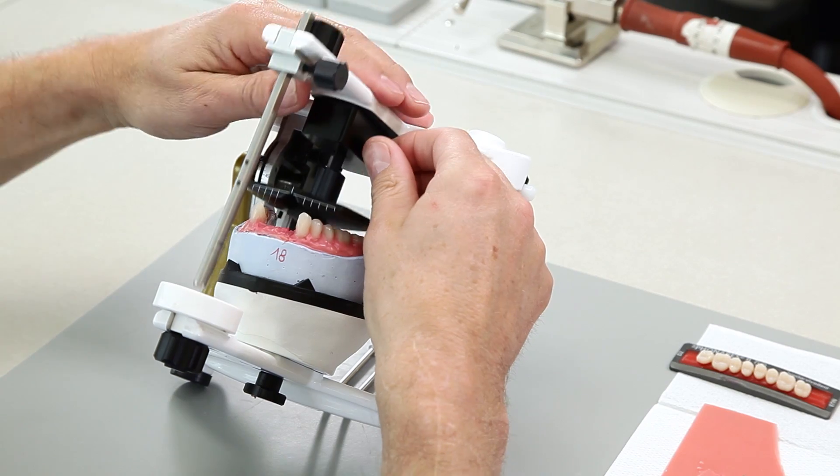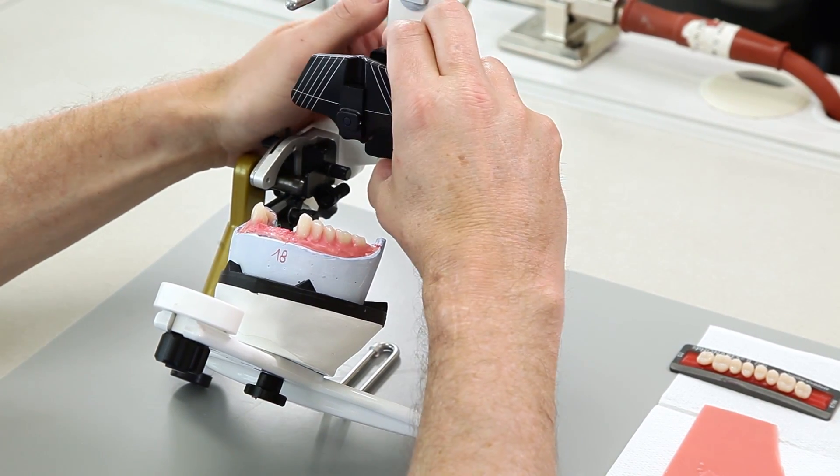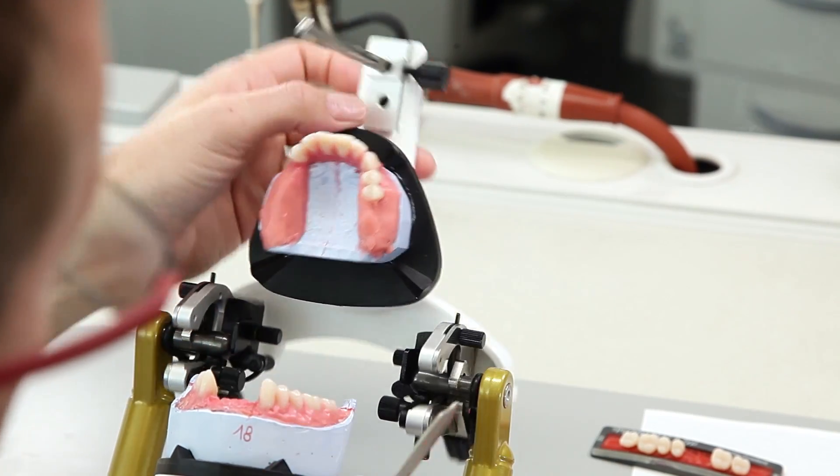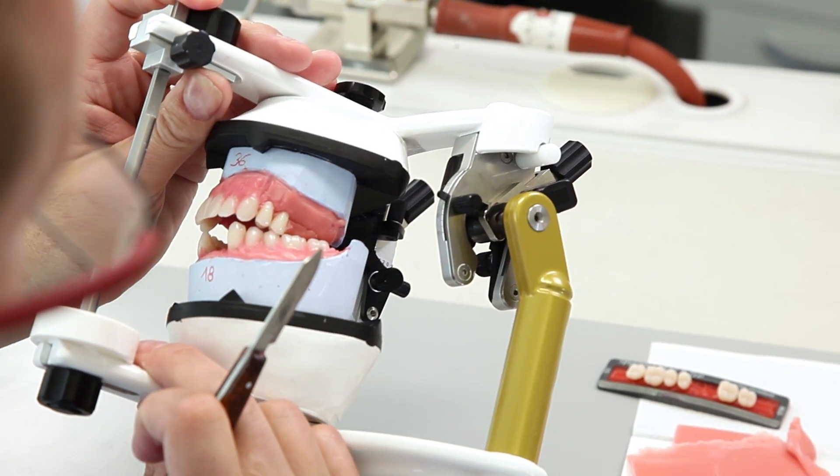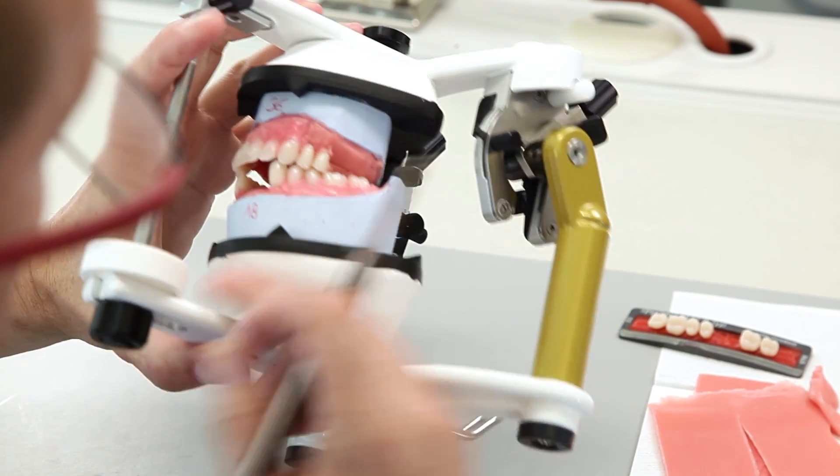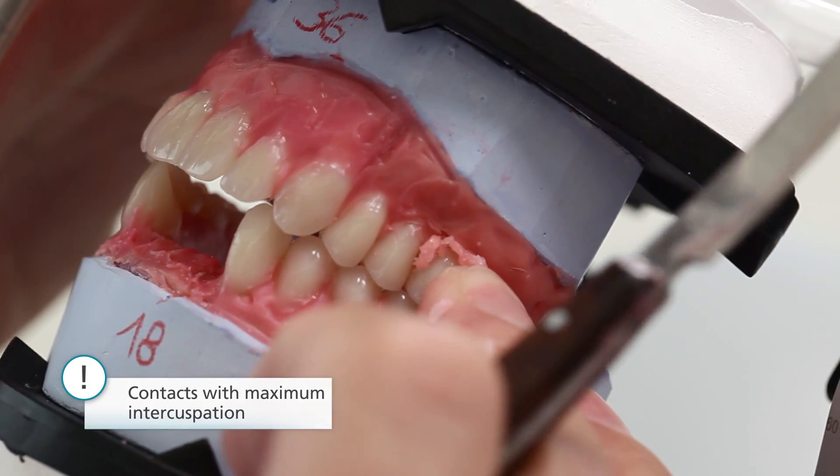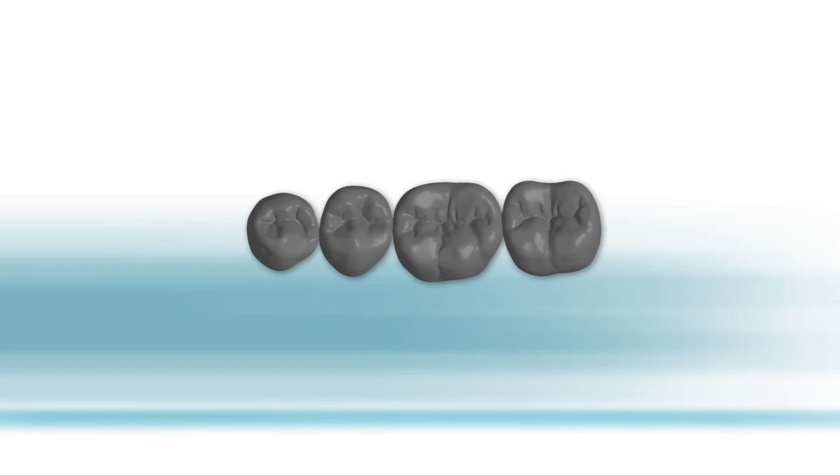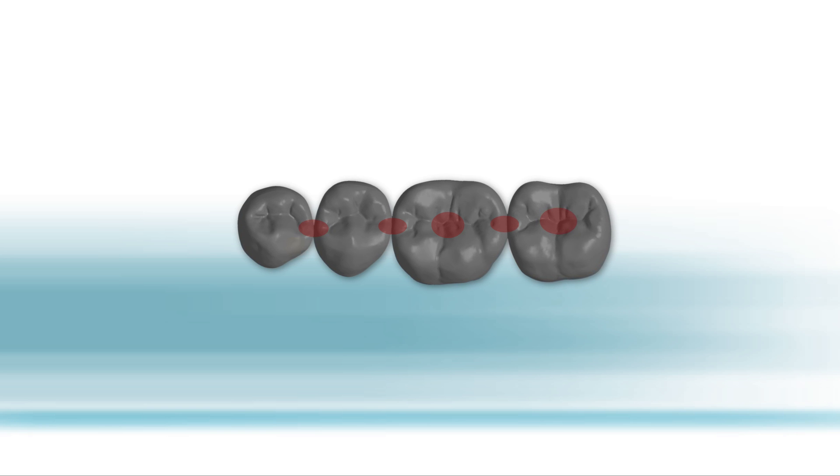Remove the setting up template and mount the maxillary model. Set up the posterior teeth of the upper jaw in accordance with a normal bite situation in a one tooth to two teeth relation to the lower jaw. When the teeth are set up correctly, the primary contacts in the centric position are located in the central fossae as well as on the marginal ridges. In the mandible, the tight teeth are supported by a secondary contact area on the buccal cusps.